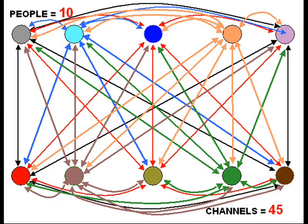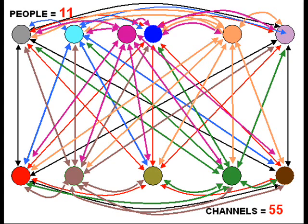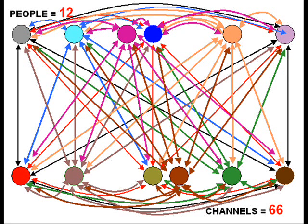Things start really getting messy when you go over nine people on a team. When you get to 12 people, everybody on the team has to watch 66 transaction channels. The leader is stretched to the limit. He or she will begin neglecting some transaction channels. Things are going to start to break. Even if the leader can stay on top of it, team members themselves will start breaking down.